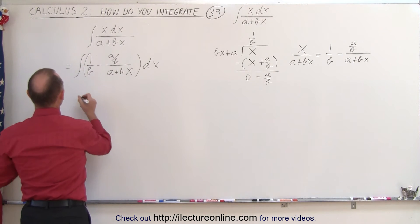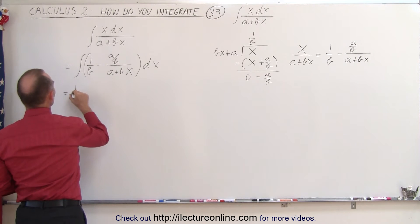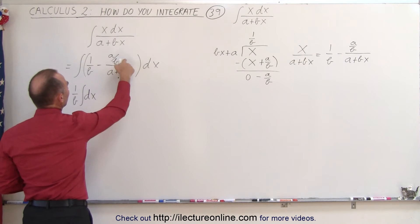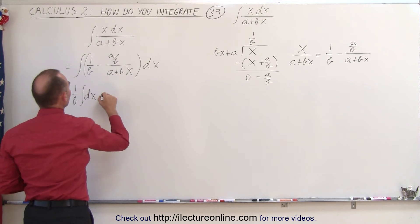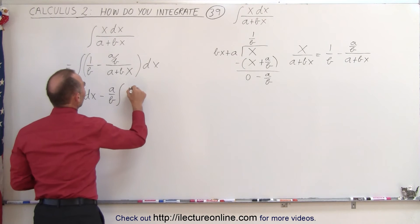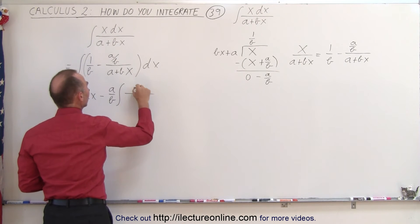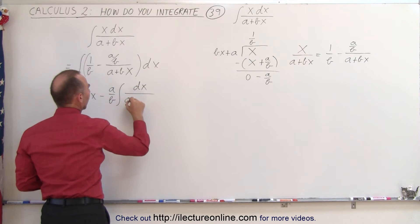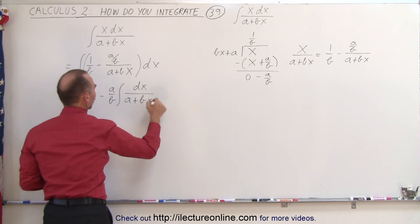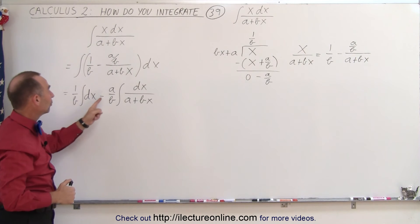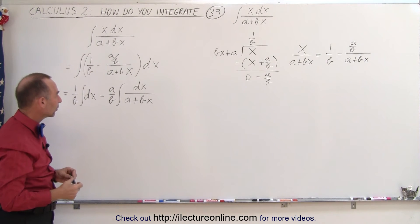So let's go ahead and do that now. So on the first integral, we say, well, this is equal to 1 over b times the integral of dx. And then we can pull a over b out. So this becomes minus a over b times the integral of 1 over, or I can simply write it as dx over a plus bx. So notice how now we've turned this into two rather simple integrals.